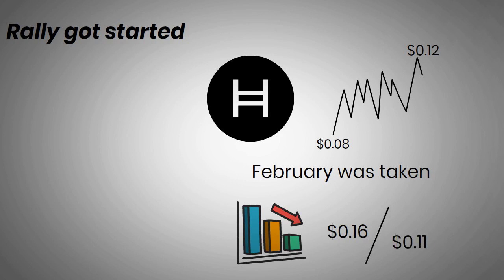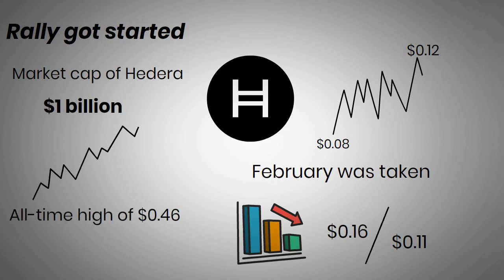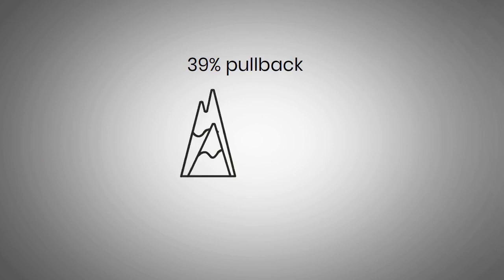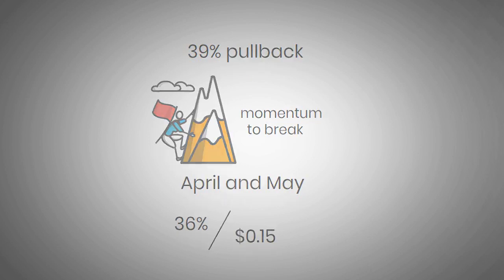February was also the month that the market cap of Hedera Hashgraph surpassed $1 billion for the first time. Price growth became much steeper in March as HBAR soared to its all-time high of $0.46, at which point the Hedera Hashgraph market cap was over $3 billion. This was followed by a 39% pullback and a couple of attempts to rally, which didn't have the momentum to break HBAR's previous high. April and May were more bearish, with a sudden 36% crash in May taking prices as low as $0.15.